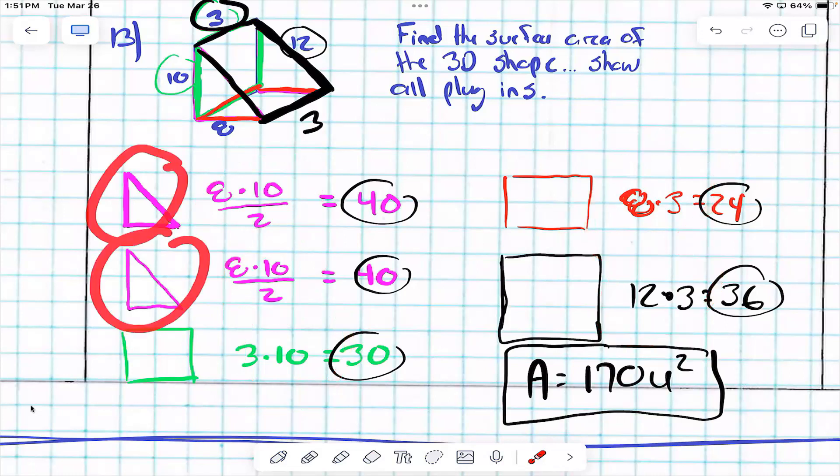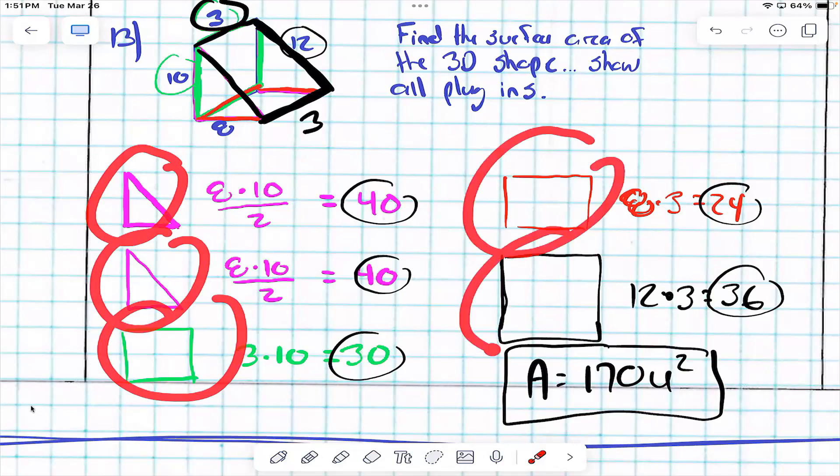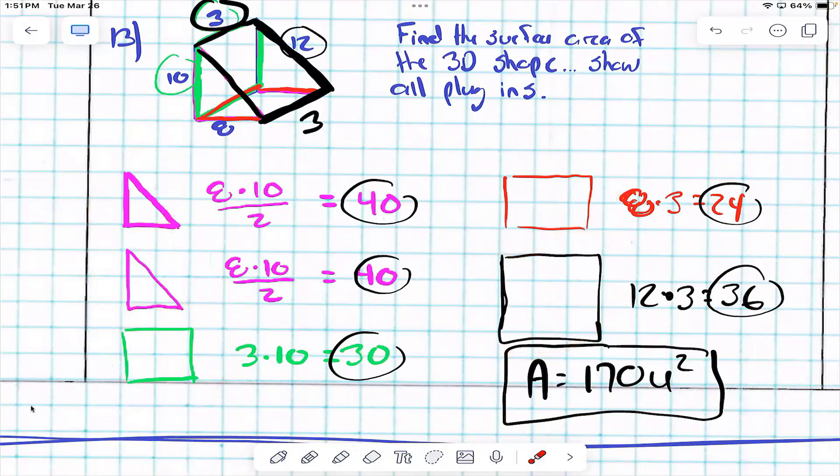Can I literally break the shapes of that 3D shape off into 2D shapes? Find the area of all of them, add them together? What's really important about triangles when you're finding the area of them? Divide by two. You need to make sure you do what? Divide by two. Divide by two. We good?